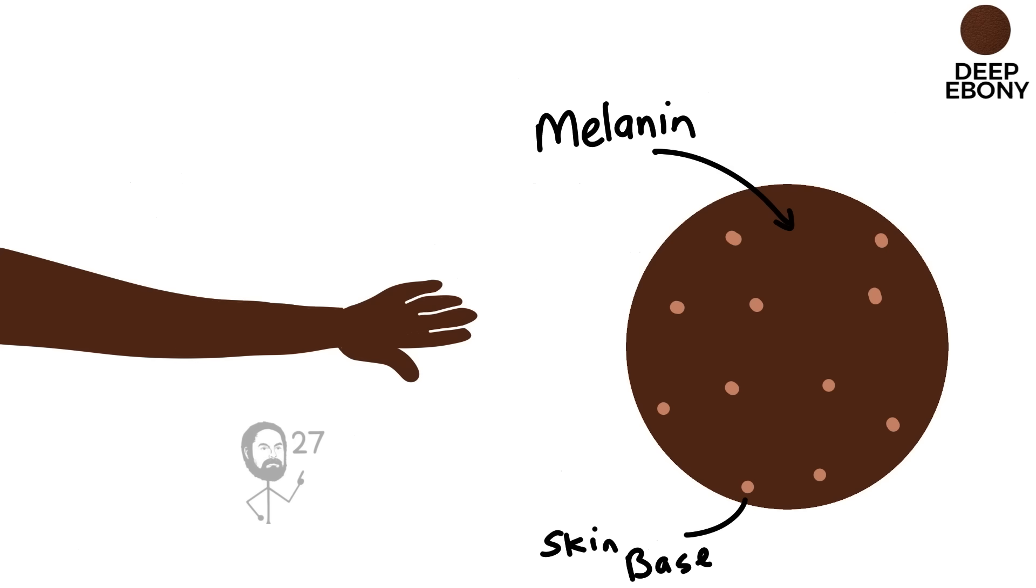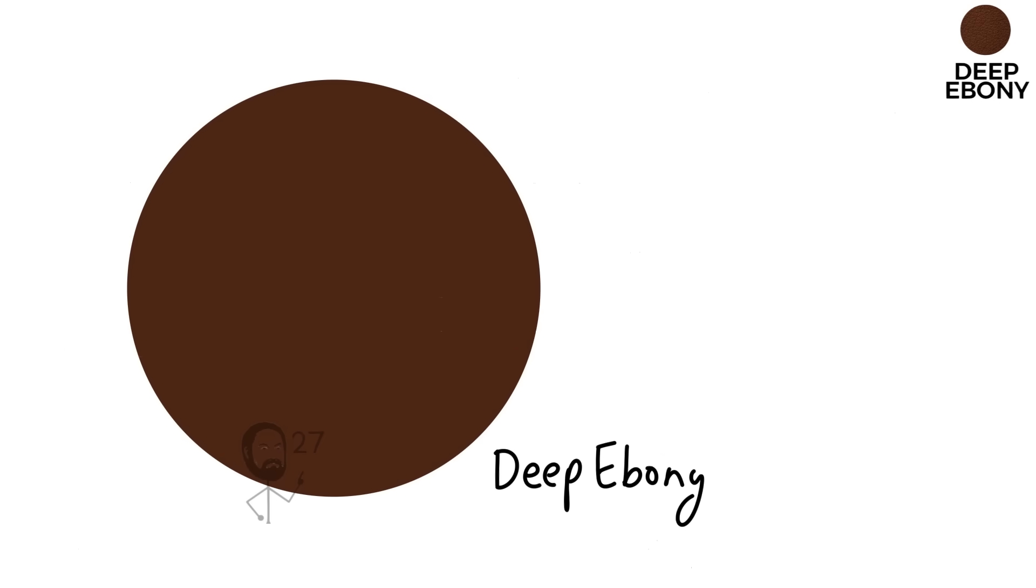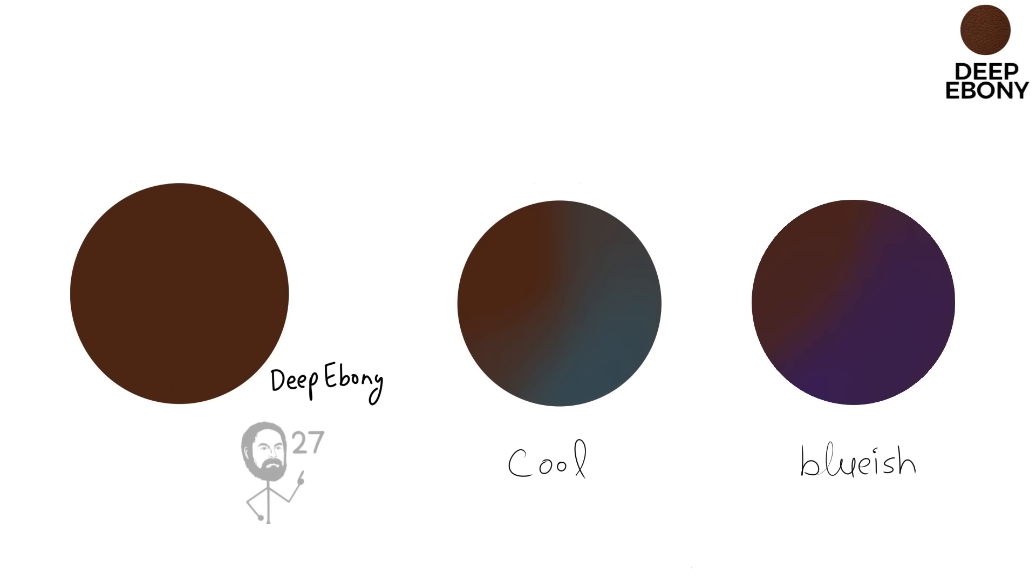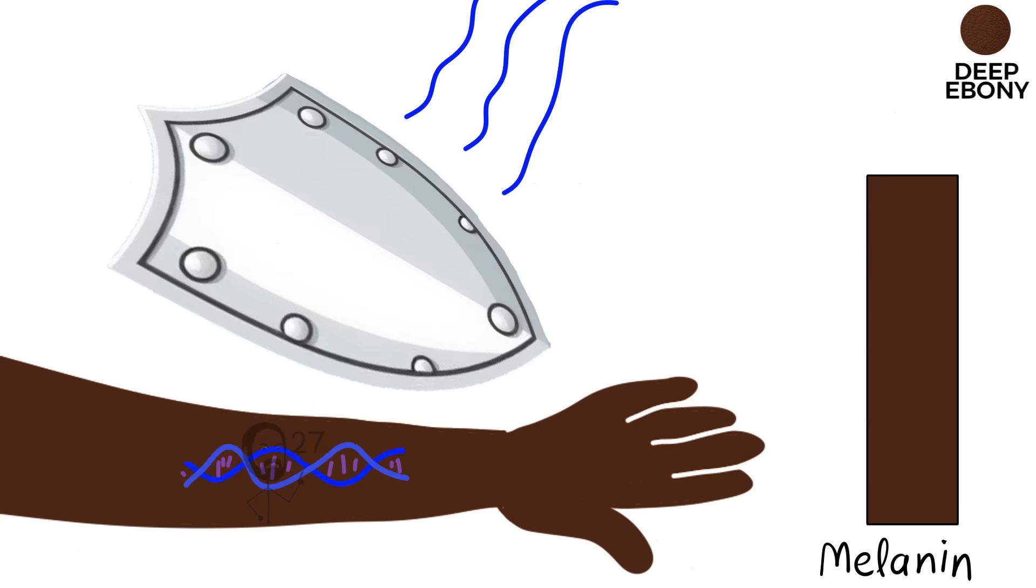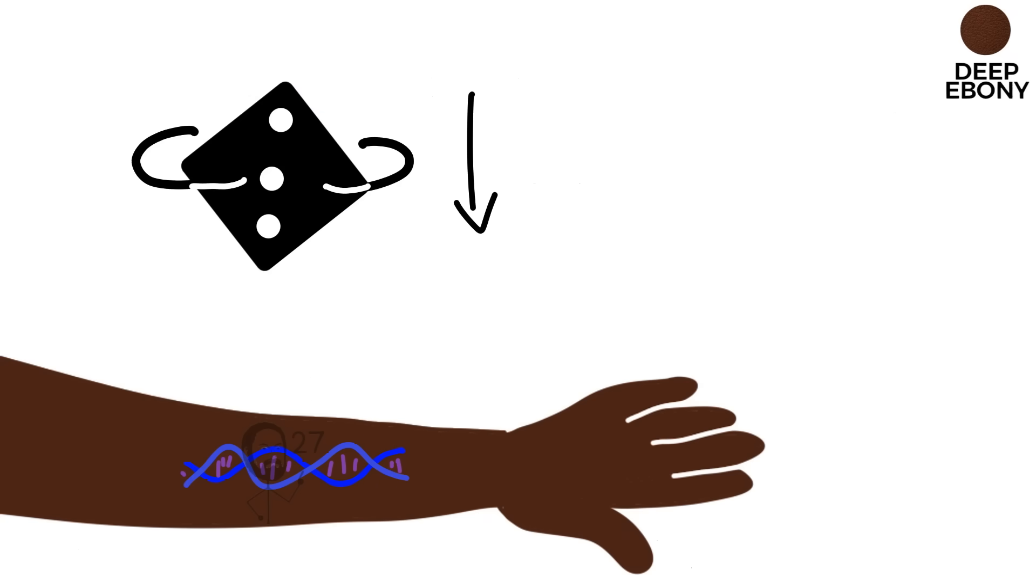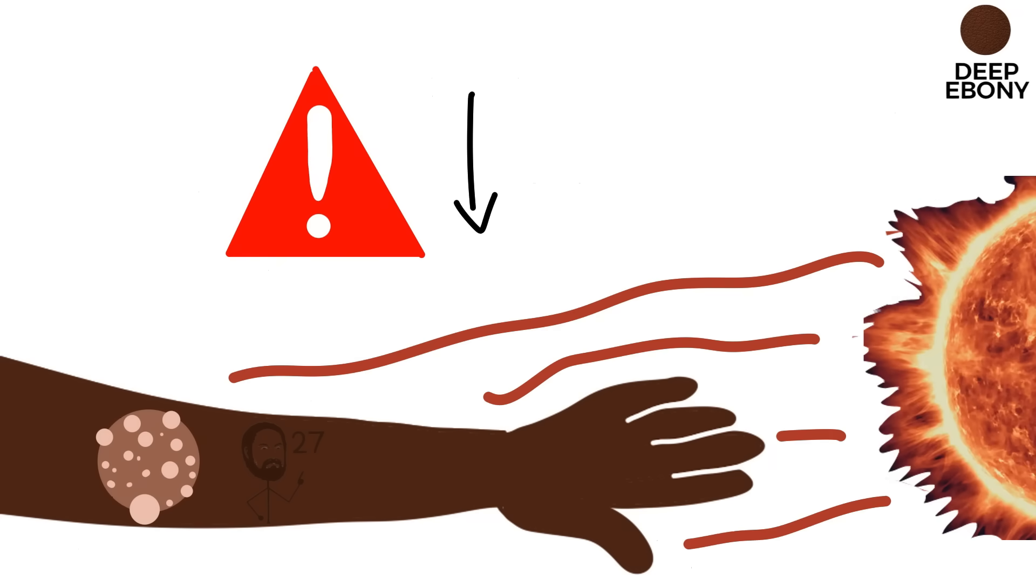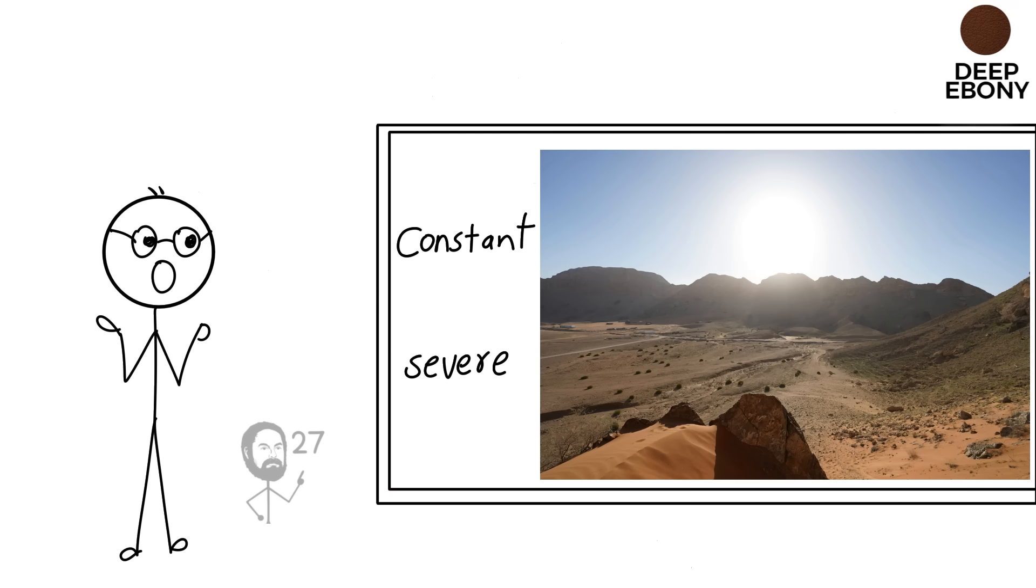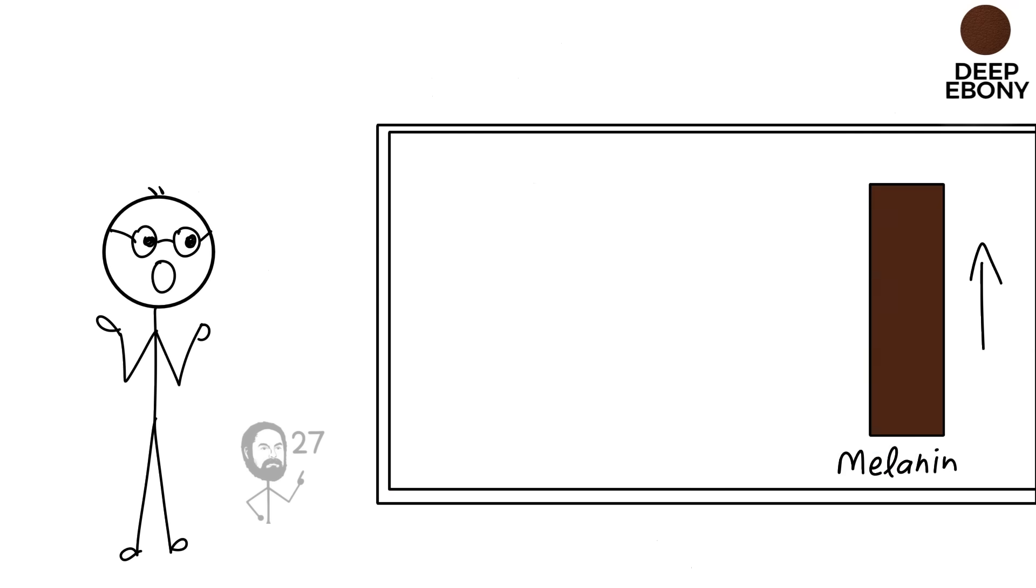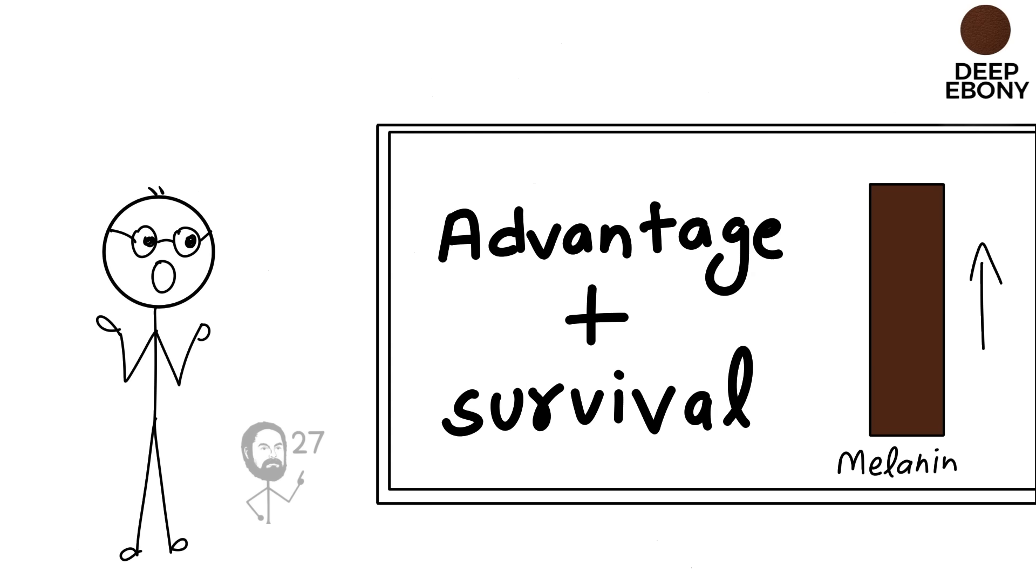In this skin type, melanin is produced in abundant quantities, creating a deep ebony appearance that sometimes carries cool or bluish undertones. This level of pigmentation protects the DNA inside skin cells, reducing the chances of mutations and lowering the risk of skin cancers caused by the sun's radiation. In an environment where solar exposure was constant and severe, this was not only an advantage but a requirement for survival.